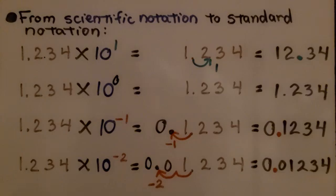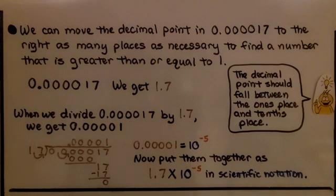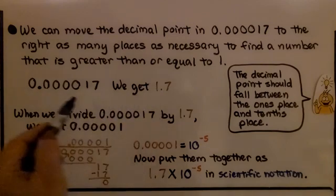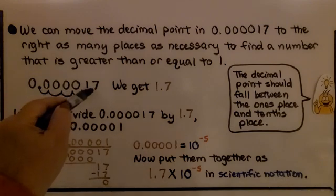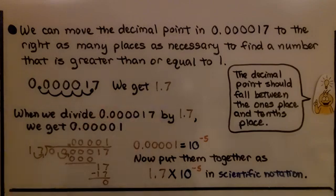From scientific notation to standard notation: we move the decimal point to the right for positive exponents, and to the left for negative exponents, using zeros as placeholders when necessary. We can move the decimal point in 0.000017 to the right as many places as necessary to find a number greater than or equal to 1. We get 1.7, with a digit in the ones place and a digit in the tenths place — that's where the decimal point should fall for scientific notation.